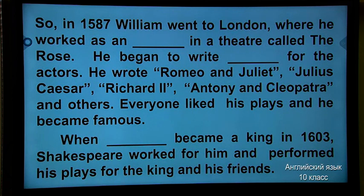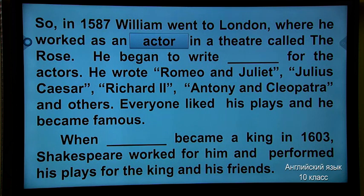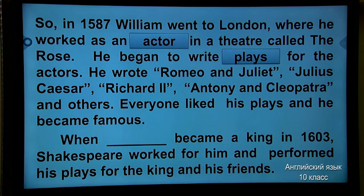In 1587, William went to London where he worked as an actor in a theatre called The Rose. He began to write for the actors. He wrote Romeo and Juliet, Julius Caesar, Richard II, Antony and Cleopatra, and others. Everyone liked his plays and he became famous.